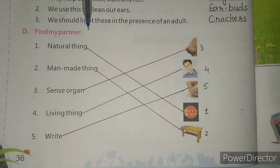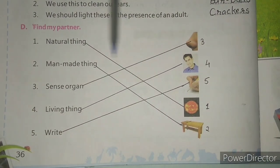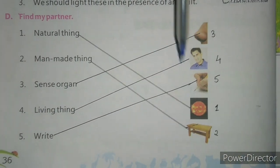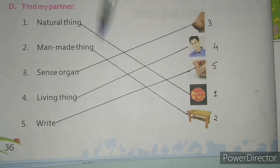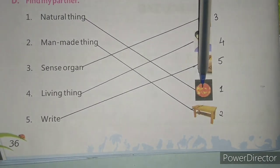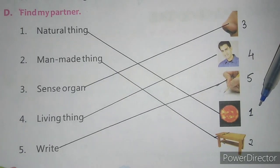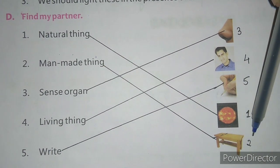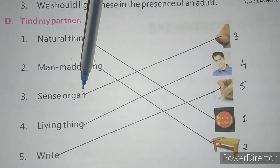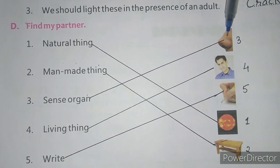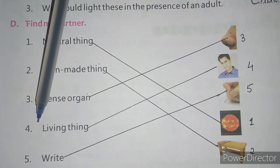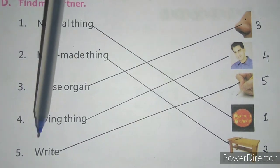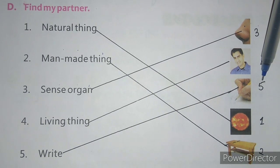Exercise D: Find my partner — pictures are given and you have to match with the correct words. Sun is a natural thing — match with 'natural thing', write number 1. Table is a man-made thing — match with 'man-made thing', write number 2. Nose is a sense organ — match with 'sense organs', write number 3 (or 4). Human being is a living thing — match with 'living thing', write number 4. We write with our hand — match with 'hand', write number 5.